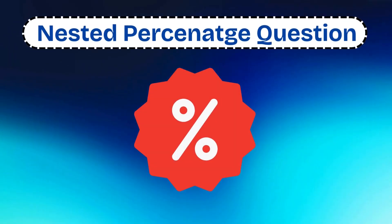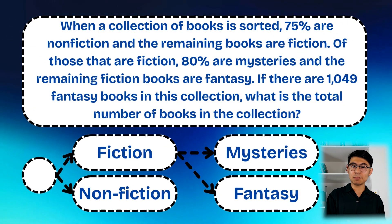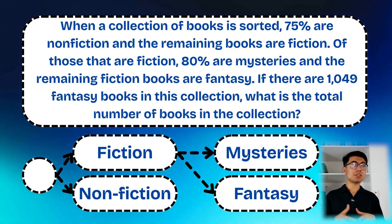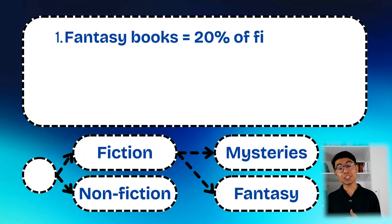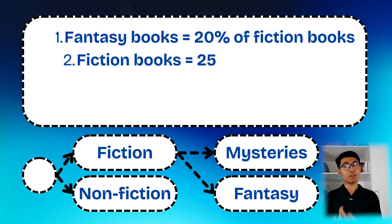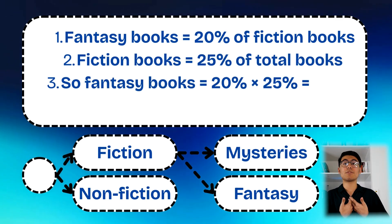Most students see this question and immediately think it's so complicated with all these nested percentages, and they scramble to set up complex equations, often making calculation errors. But when you recognize the skeleton of this question, you see it's just a standard nested percentage problem. The structure is: a big group divided into two categories (non-fiction vs. fiction), with one subgroup further divided (mysteries vs. fantasy). The genius approach is to work backwards: fantasy books equal 20% of fiction books, and fiction books equal 25% of total books, so fantasy books equal 5% of total books.